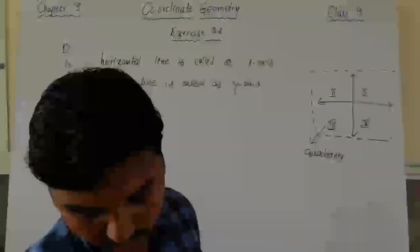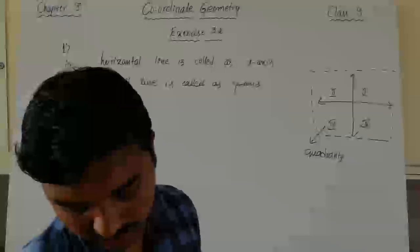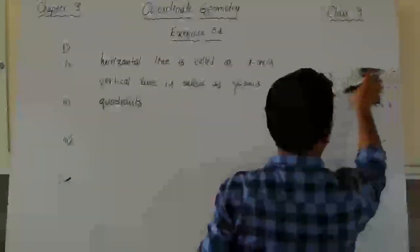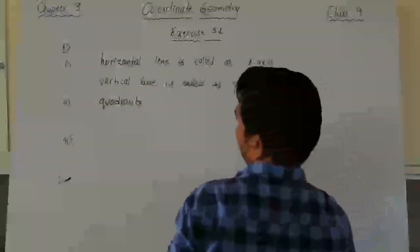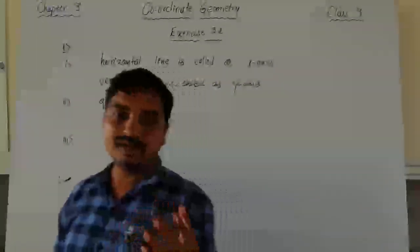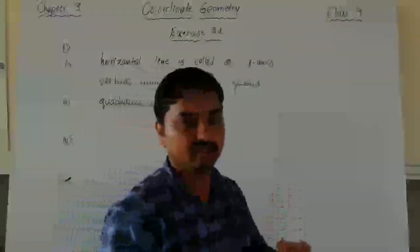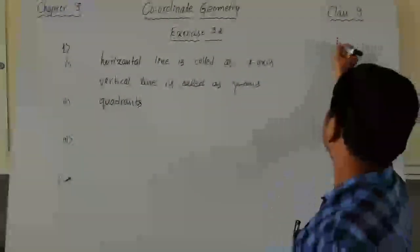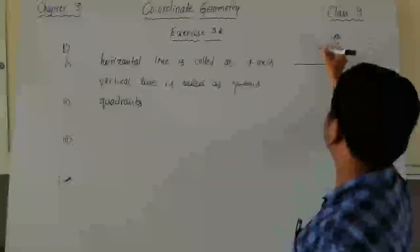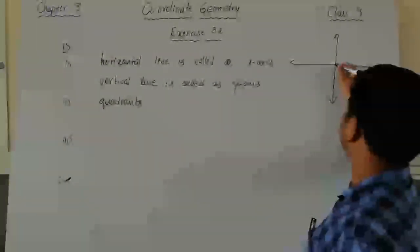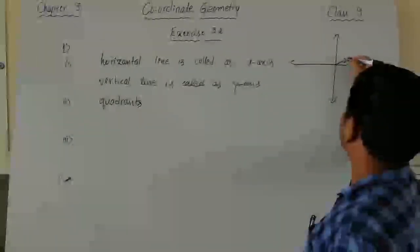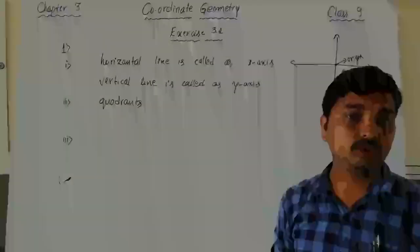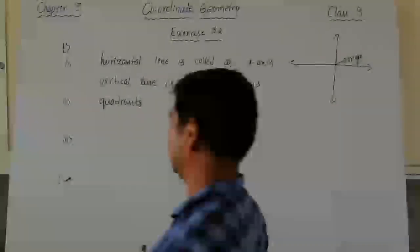The third sub-question asks: write the name of the point where these two lines intersect. These two lines means the x-axis and y-axis. When the x-axis and y-axis intersect at a single point, that point is called the origin, denoted by capital letter O. The coordinates of the origin are 0 comma 0.